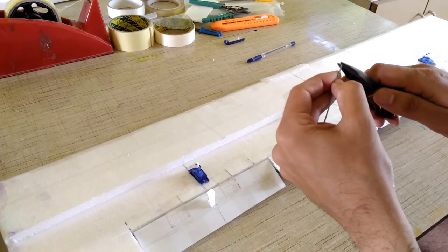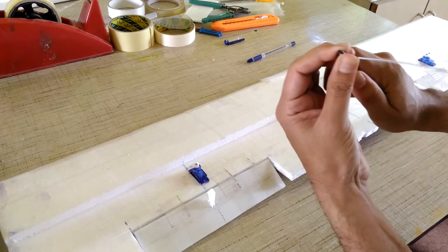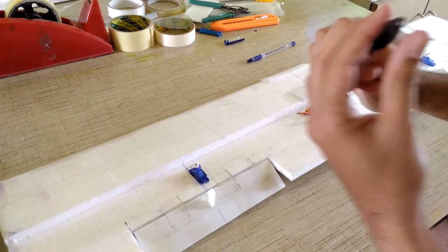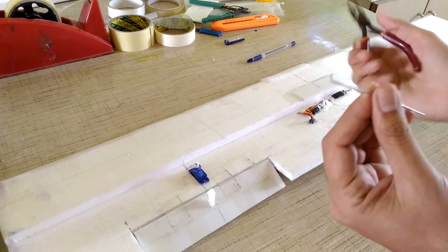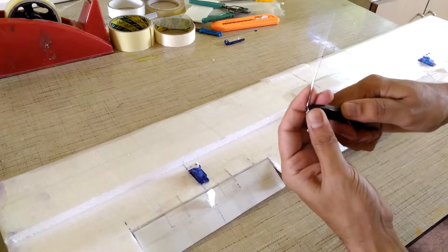Here I am making the push rods for the ailerons so I am using this Z bend method on both the sides. So on the servo side as well as the control horn side.